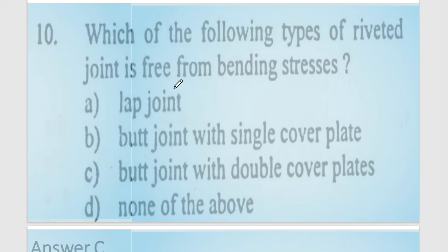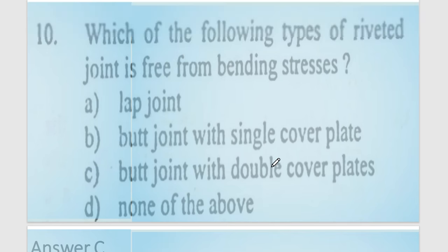Question 9: which type of riveted joint is free from bending stress? Options are: lap joint, butt joint with single cover plate, or butt joint with double cover plates.